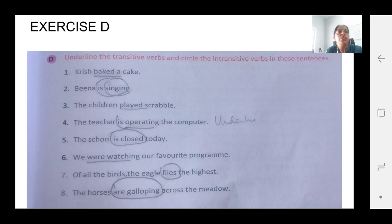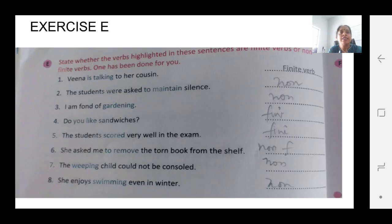Number 4. Teacher is operating the computer. What she is operating? Computer. That is why it is a transitive verb. So in this way you will be doing the remaining 5, 6, 7, 8. Exercise E.